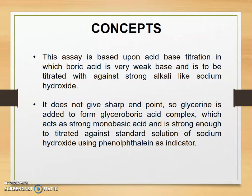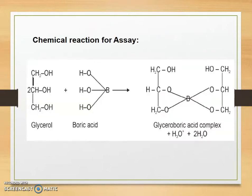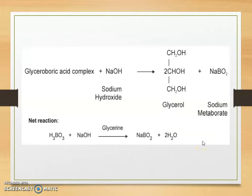The chemical reaction behind assay of boric acid: first, glycerol reacts with boric acid to form glyceroboric acid complex plus H3O plus two molecules of H2O. Then this glyceroboric acid complex reacts with sodium hydroxide to form glycerol plus sodium metaborate NaBO2. The net reaction is H3BO3 plus NaOH gives NaBO2 in presence of glycerin plus two molecules of H2O.